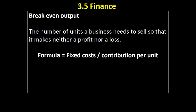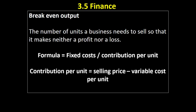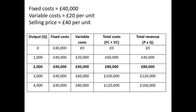Break-even output is the number of units a business needs to sell so it makes neither a profit nor a loss. We can look at a break-even chart and spot the point at which total revenue equals total costs. However, we can also calculate it using the formula: fixed cost divided by contribution per unit, where contribution per unit is the selling price minus the variable cost per unit.